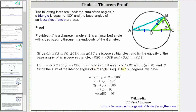The three interior angles of triangle ABC are alpha, alpha plus beta, and beta. Since the sum of the interior angles of a triangle is 180 degrees, we have alpha plus (alpha plus beta) plus beta equals 180 degrees. Combining like terms: two alpha plus two beta equals 180 degrees. Factoring out two: two times (alpha plus beta) equals 180 degrees. Dividing both sides by two: alpha plus beta equals 90 degrees. Since alpha plus beta is angle B, or more specifically angle ABC, we have proven that the measure of angle ABC equals 90 degrees.